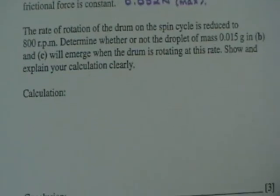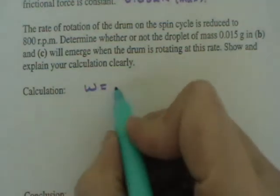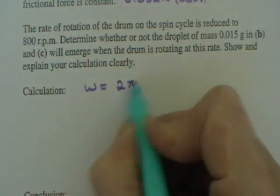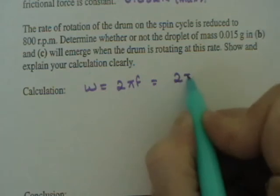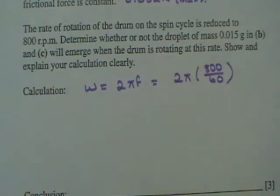The rate of rotation of the drum in the spin cycle is reduced to 800. Determine whether or not the droplet of mass 0.015 grams in B and C will emerge when the drum is rotating at this rate. Show and explain your calculation carefully. So first thing we want to do is calculate omega again. It's 2 pi f. And this time f is going to be 800 divided by 60. 800 revolutions in a minute.